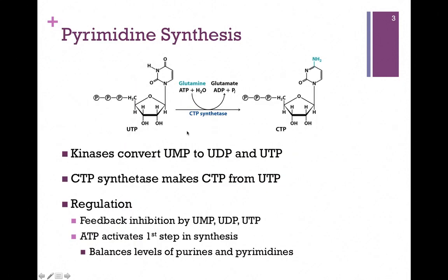In the next step, kinases will convert UMP to the di- and trinucleotides, and so to form CTP, we start with UTP. You'll notice we have a carbonyl on our base here — we're going to replace that with an amine group, and that will come from the amino acid glutamine. The enzyme is CTP synthetase. It requires hydrolysis of ATP, and there's our CTP product.